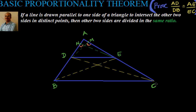Let me repeat that. We have a triangle ABC. We have drawn a line DE parallel to BC. The theorem states that if this line DE is intersecting AB and AC at two distinct points D and E, then the other two sides are divided in the same ratio — that means AD divided by DB is equal to AE by EC.